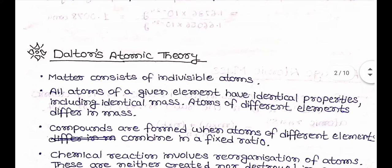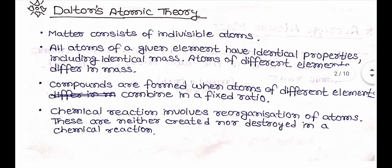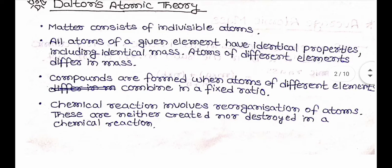Now let us come to Dalton's Atomic Theory. You have also read Dalton's Atomic Theory in Class 9 and it is similar to that. 1. Matter consists of individual atoms. All atoms of a chemical element have identical properties including identical mass. Atoms of different elements differ in mass. Compounds are formed when atoms of different elements combine in a fixed ratio. 2. Chemical reactions involve reorganization of atoms. These are neither created nor destroyed in a chemical reaction.